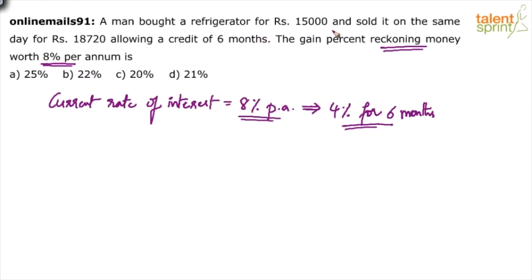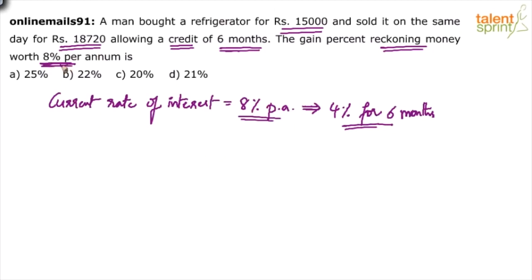This is a real-life situation. I spent fifteen thousand rupees on the refrigerator, came out of the shop, and sold it to somebody else for 18,720. But the point is I will get that 18,720 only after six months — I have given him a credit of six months. The current rate of interest is eight percent per annum. So what you need to find is: how much should I deposit in the bank today so that I get 18,720 after six months?